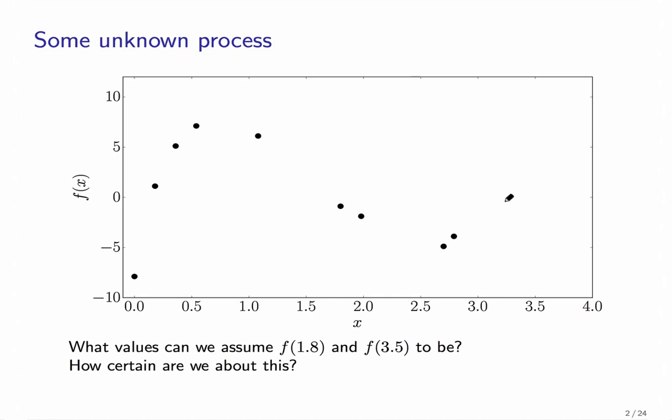So let's say we get some output value for 1.8. It's between two known values, so we are pretty certain that it should be somewhere around here. On the other hand, for input 3.5 we don't have very much information. So we probably won't be that certain about the output here.